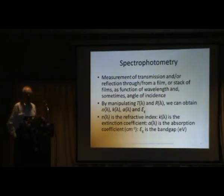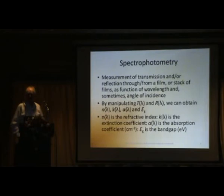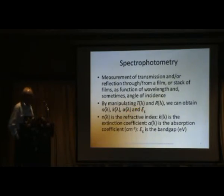Usually with a UV-visible spectrophotometer, we measure from a wavelength of something like 300 nanometers in the UV end to a wavelength of perhaps 2.5 microns in the near-infrared part of the spectrum. That covers the entire range of wavelengths and therefore energies of relevance for the operation of solar cells. By manipulating T(λ) and R(λ), we can obtain the refractive index, the extinction coefficient, and from the extinction coefficient we get the absorption coefficient. From the absorption coefficient as a function of lambda, we can make an estimate of the band gap.